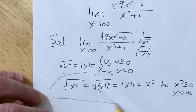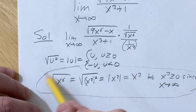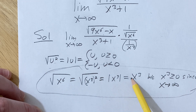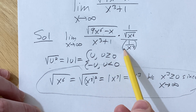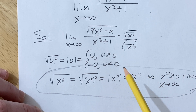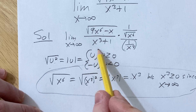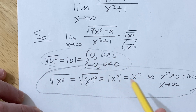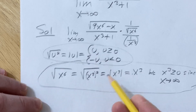This is the key in this problem right here. If x was approaching negative infinity, you would have a minus x³ here, so you would actually have a minus here. This is really, really subtle — it requires a strong command of the definition of absolute value. Let's keep going.